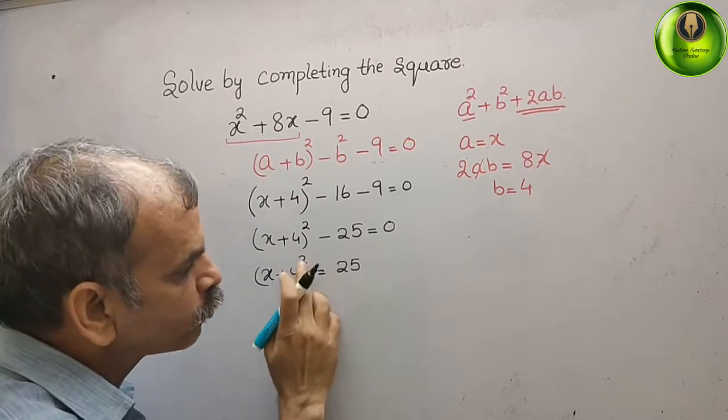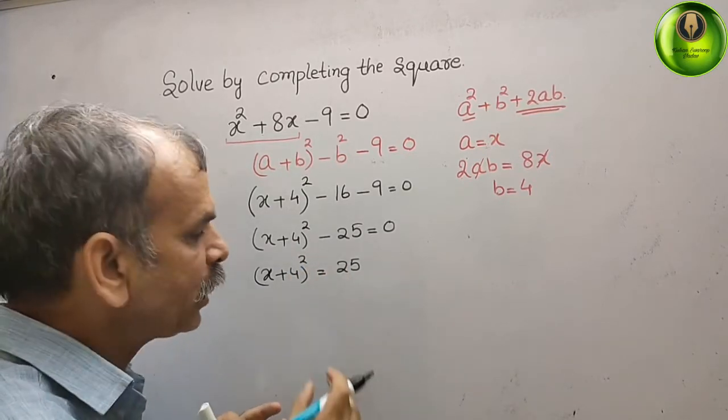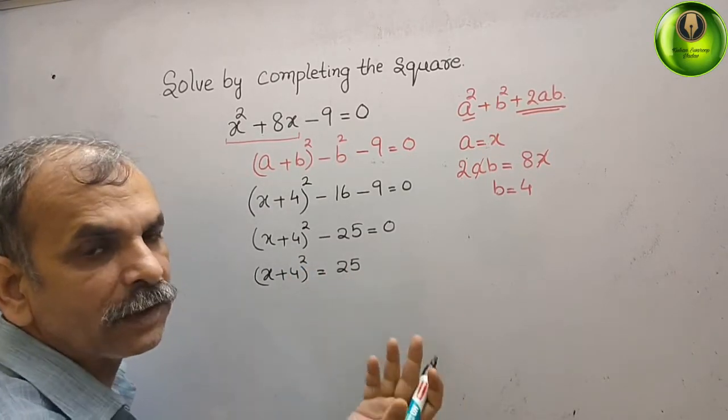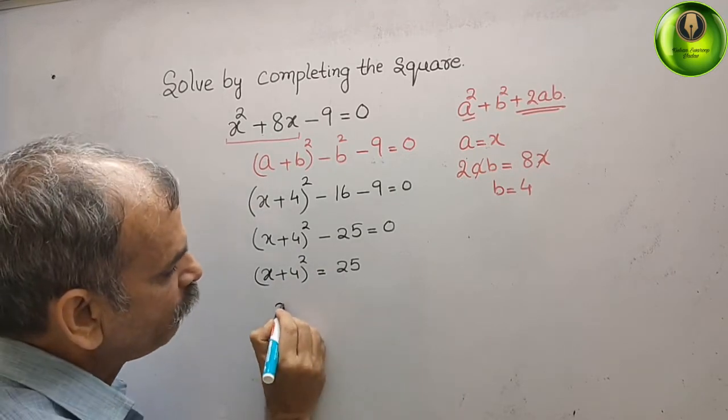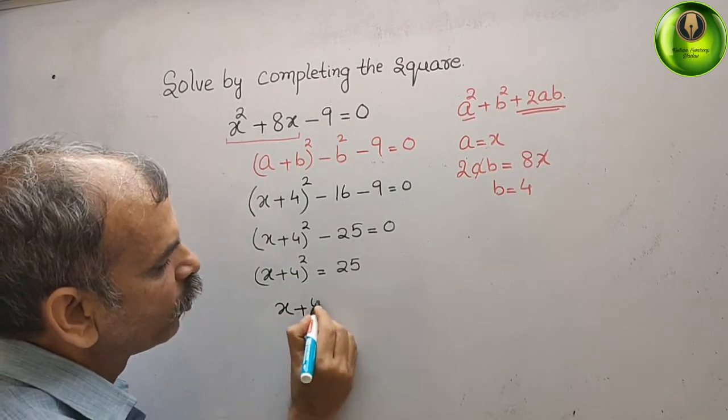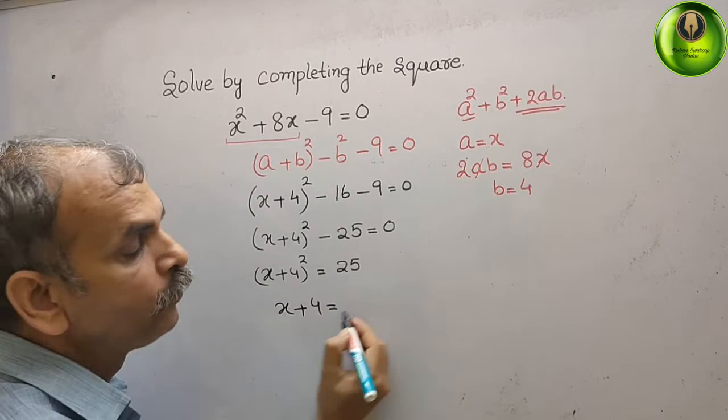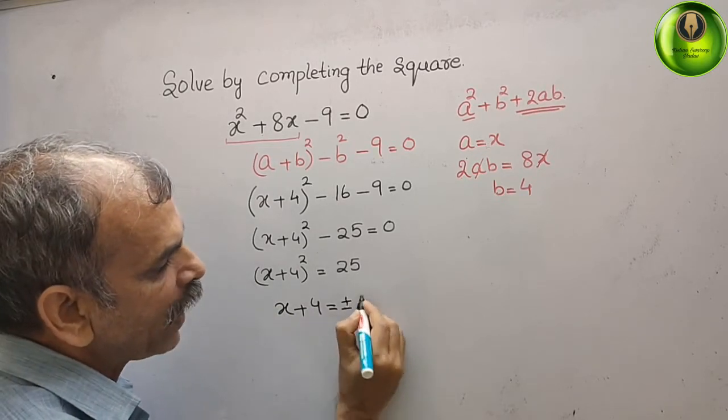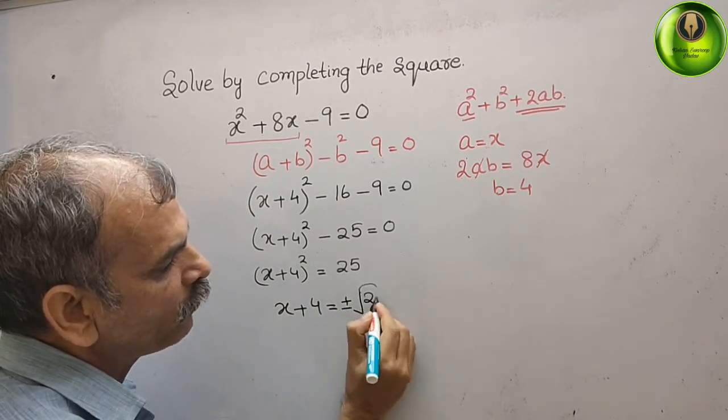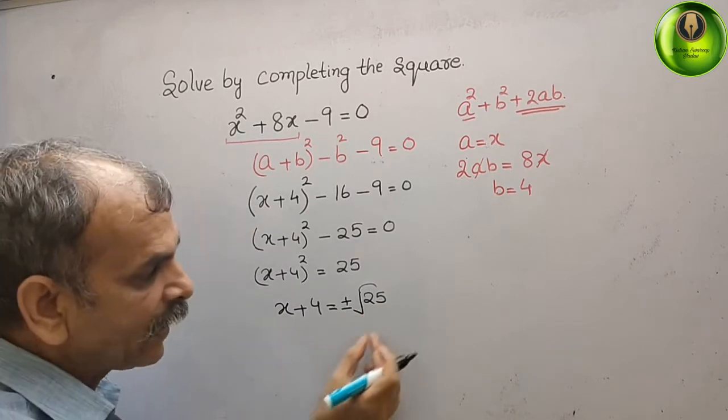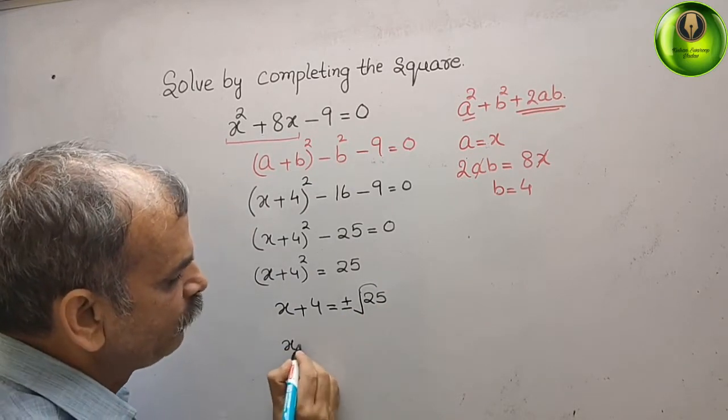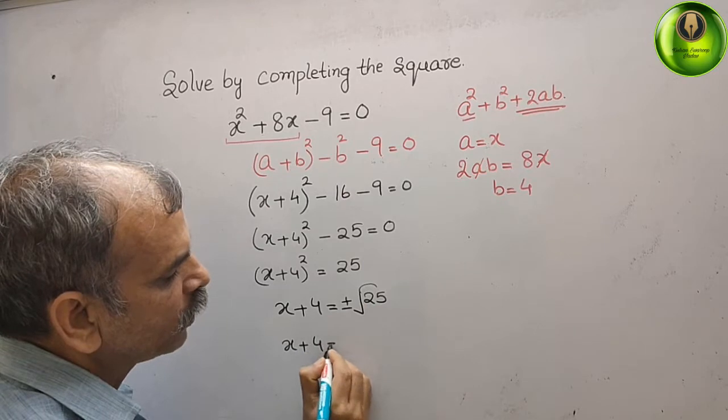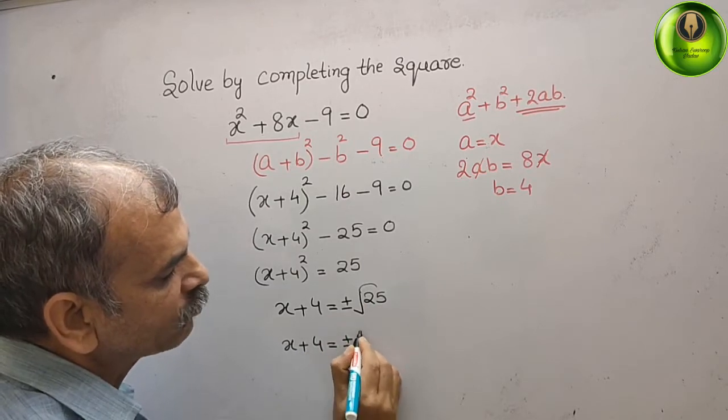If (x + 4)² is 25, what is our x + 4? That we have to write. So now we can say x + 4 is equal to plus and minus root over 25, that is our 5. We will write that only: x + 4 = ±5.